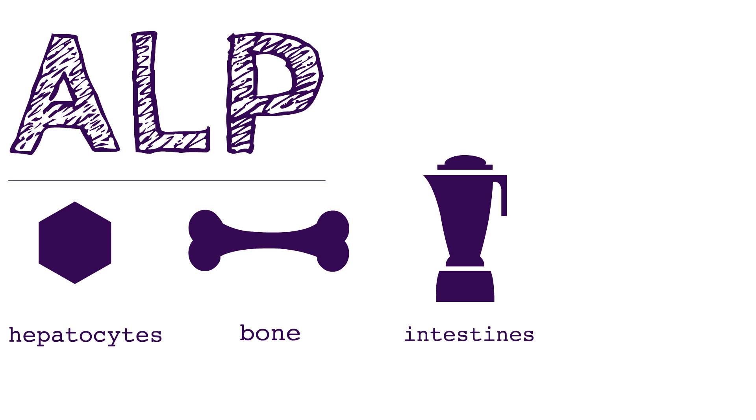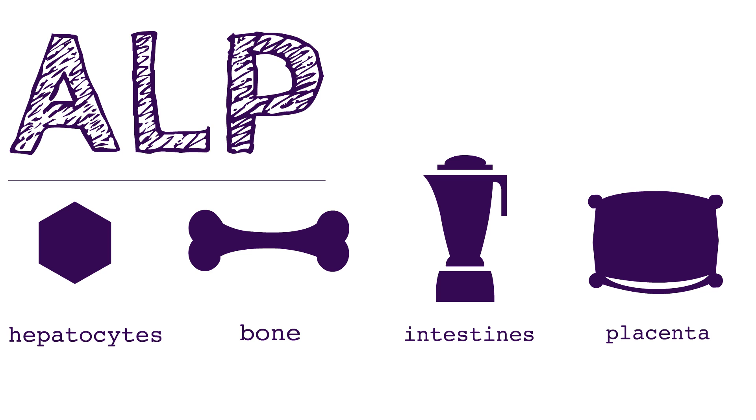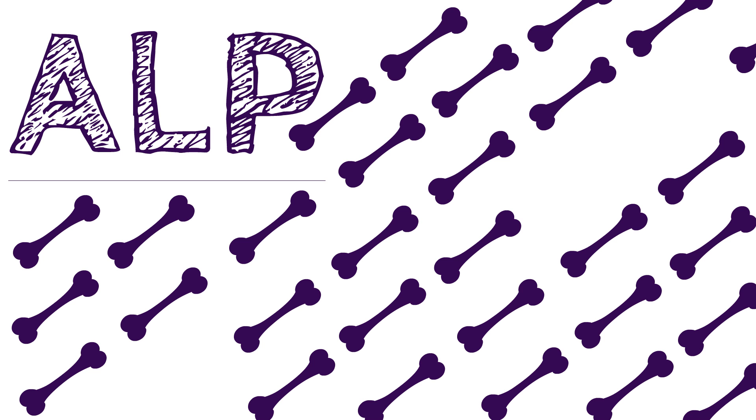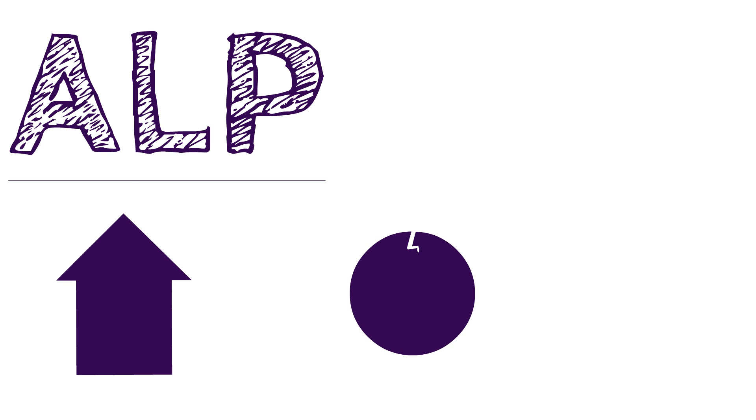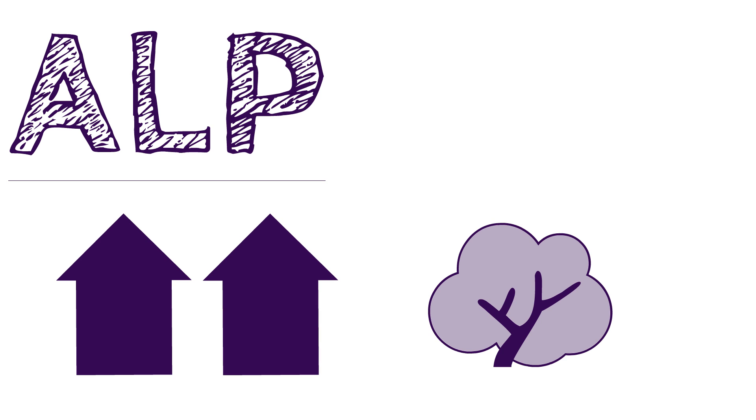ALP is found in the hepatocytes lining the hepatic duct, but is also found in bone, intestines and placenta. High levels can be attributed to conditions where bone turnover is high, for example adolescence, the third trimester of pregnancy, bony metastases or fractures. High levels are also associated with liver disease, and very high levels are seen with a bile duct blockage.